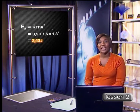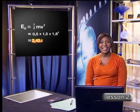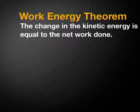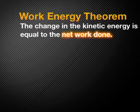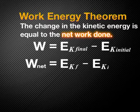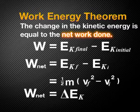Now let's get back to that relationship between energy and work. The work-energy theorem states that the net work done on an object is equal to the change in its kinetic energy. Simply put, the change in kinetic energy is equal to the net work done. We can write this mathematically as: net work equals final kinetic energy minus initial kinetic energy, or as half of the mass of the object times final velocity squared minus initial velocity squared.